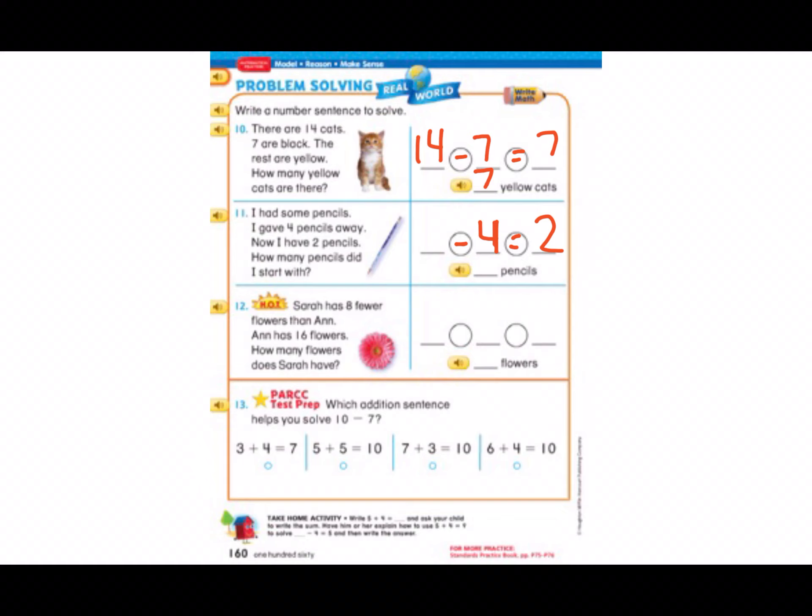And to solve this you could use addition. 4 plus 2 equals 6, so we know that 6 minus 4 equals 2. And she started off with 6 pencils.